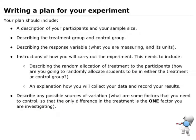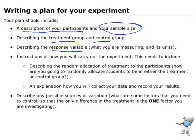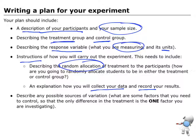Here are the things I need to think about in my plan. I need to describe who my participants are and state my sample size. I need to describe my treatment group and control group. I need to know the response variable — what I am measuring — and that needs units with it. Then I need specific instructions that must include how the random allocation is going to work: how am I going to choose which student does their dominant hand first and which does their non-dominant hand first. I need an explanation of how I'm going to collect and record my data. Lastly, I want to identify sources of variation — in an experiment, we want to control everything except for the one thing we're testing.